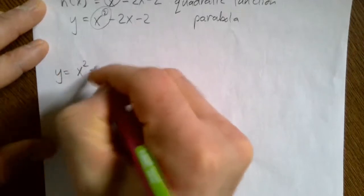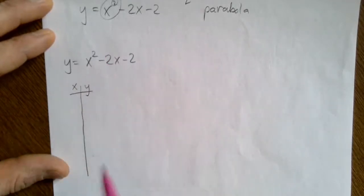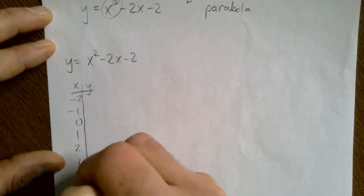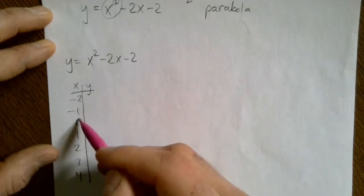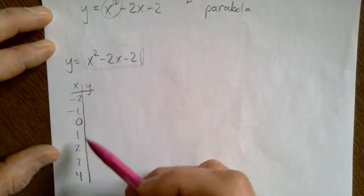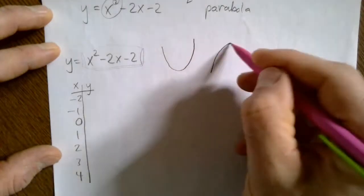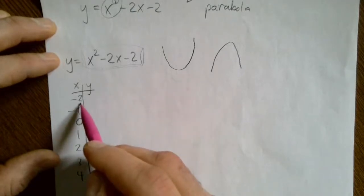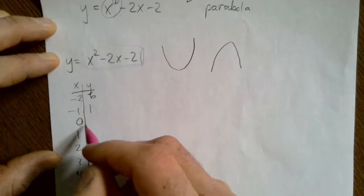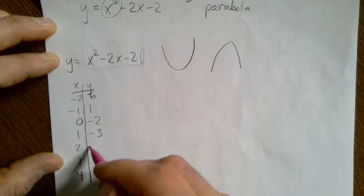To start, I'll write y = x² - 2x - 2. You can always graph by making a t-chart with x and y. We'll pick x values: negative 2, negative 1, 0, 1, 2, 3, 4. Make sure you pick enough points because if you don't know the shape you can easily miss it. Plugging those in gives us: x = -2 gives y = 6, x = -1 gives y = 1, x = 0 gives y = -2, x = 1 gives y = -3.